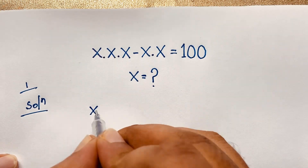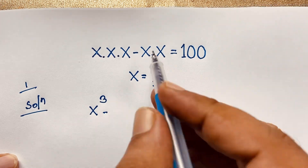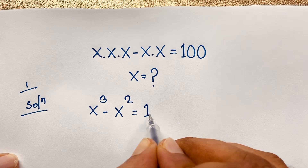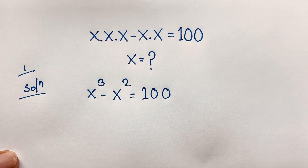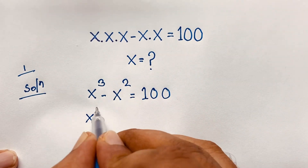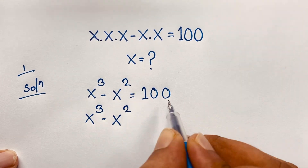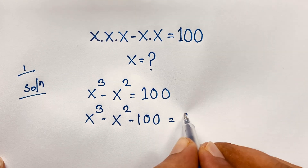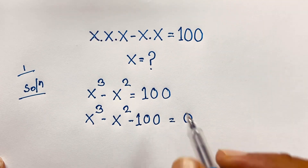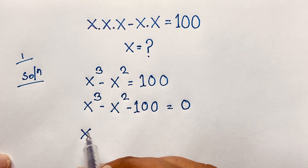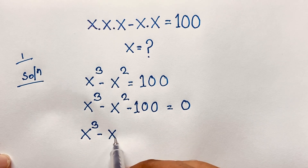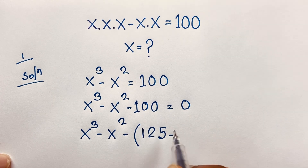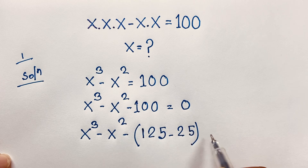Our first method: x times x times x is x to the power 3, minus x times x is x to the power 2, equals 100. So the cubic equation is x³ - x² - 100 = 0. Now, notice that 100 = 125 - 25, so we can write x³ - x² - 125 + 25 = 0.